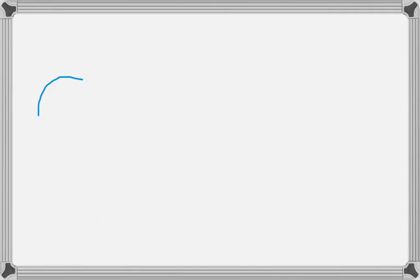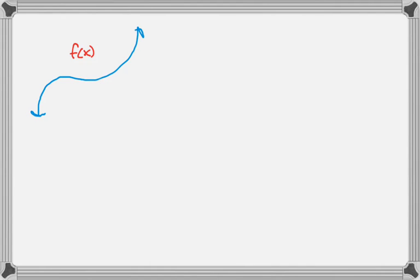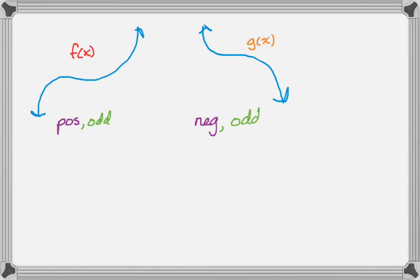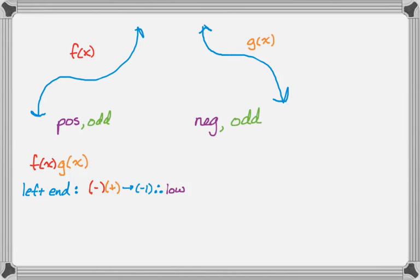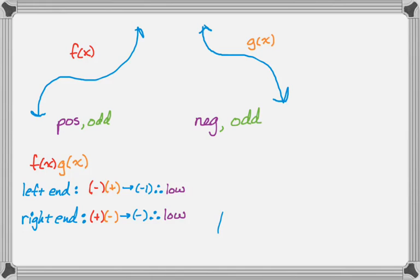Let's look at one more. Say f(x) goes low to high — that's a positive odd. And g(x) goes high to low — that's a negative odd. For f(x) times g(x): the left end behavior is low times high, which is negative times positive — negative, so low. The right end behavior is high times low — positive times negative — also negative, so low. The product goes low to low, which is a negative even polynomial.